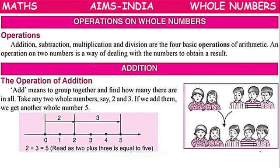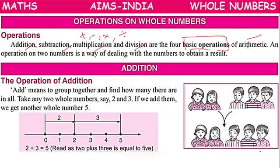Now let us discuss some operations on whole numbers. Operations include addition, subtraction, multiplication, and division — these four are the basic operations of arithmetic. An operation on two numbers is a way of dealing with the numbers to obtain a result.